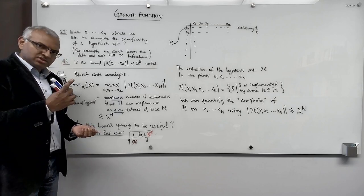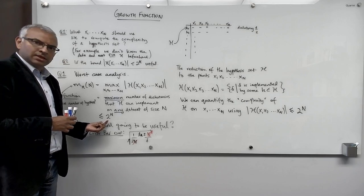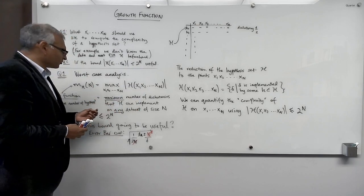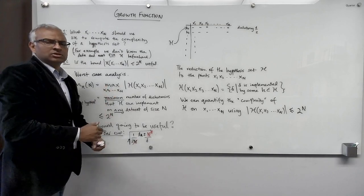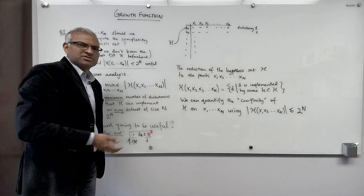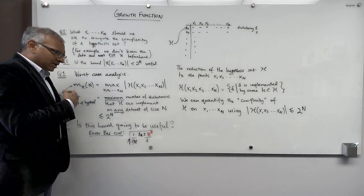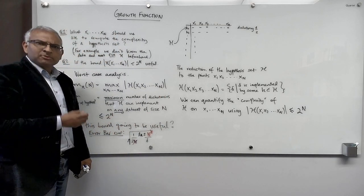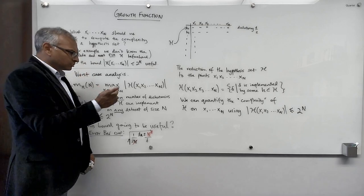We need to address whether, for all hypothesis sets we are interested in, the effective complexity is 2^n. If so, this discussion would be for naught. Let's consider examples of infinite hypothesis sets and compute the growth functions to get a feeling for them — and that will lead us to the combinatorial puzzle I mentioned.